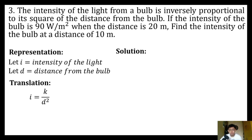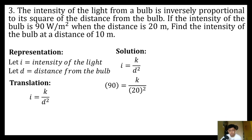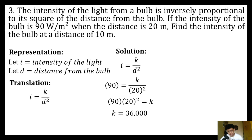We substitute into our equation i = k over d². Substituting our pair of intensity and distance, and simplifying by multiplying both sides by 20 squared, we get our constant of variation which is 36,000.